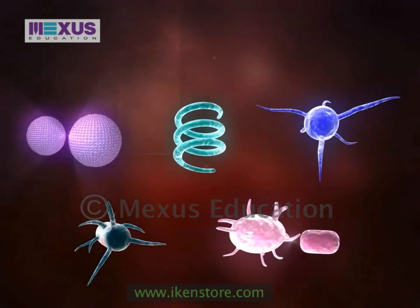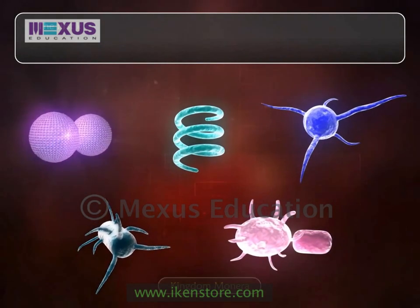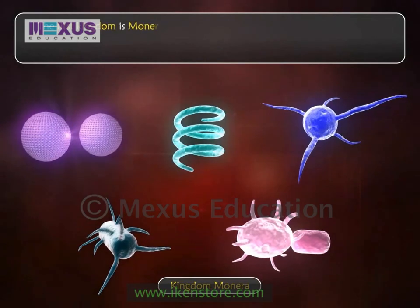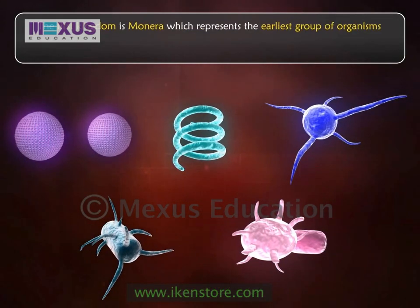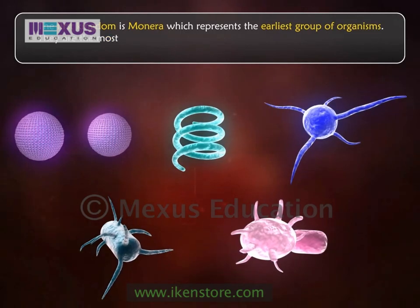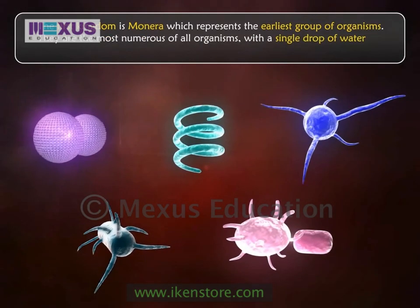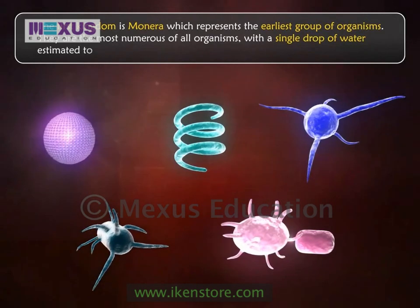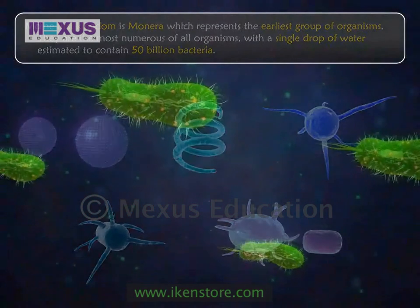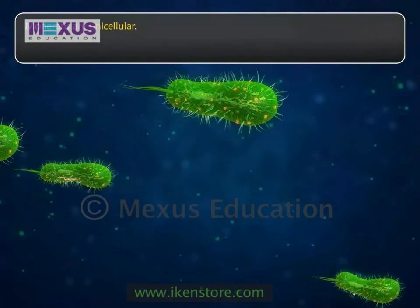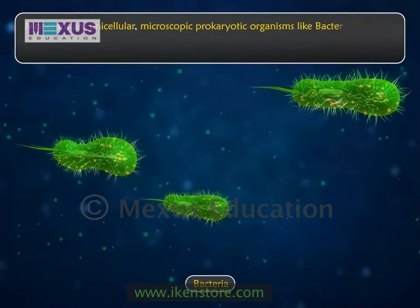Let's look at each kingdom one by one. The first kingdom is Monera, which represents the earliest group of organisms. They are the most numerous of all organisms — a single drop of water is estimated to contain 50 billion bacteria. Monerans are unicellular, microscopic prokaryotic organisms such as bacteria.